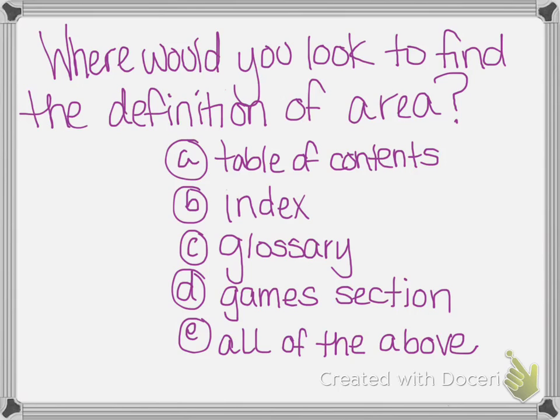So the table of contents is in the very front of the book, which tells you what page you might want to find something. So it doesn't tell us the definition. The index is the very back of the book, again, where you look up a concept and it tells you what page you can find more information on. But it doesn't give us a definition.